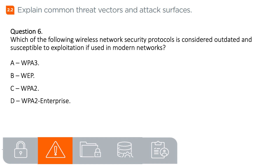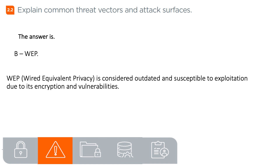Question 6. Which of the following wireless network security protocols is considered outdated and susceptible to exploitation if used in modern networks? A. WPA3, B. WEP, C. WPA2, D. WPA2 Enterprise. The answer is B. WEP. WEP (Wired Equivalent Privacy) is considered outdated and susceptible to exploitation due to its encryption vulnerabilities.